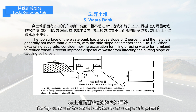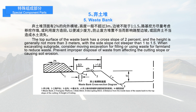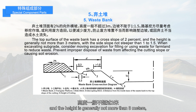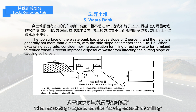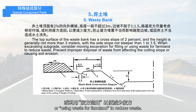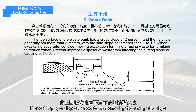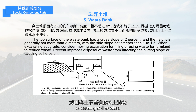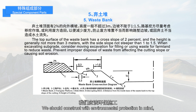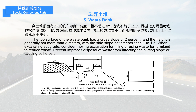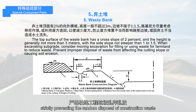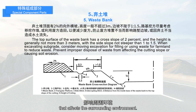The top surface of the waste bank has a cross slope of 2%, and the height is generally not more than 3 meters, with the side slope not steeper than 1 to 1.5. When excavating subgrade, consider moving excavation for filling or using waste for farmland to reduce waste. We should construct with environmental protection in mind, strictly preventing the random disposal of construction waste that affects the surrounding environment.